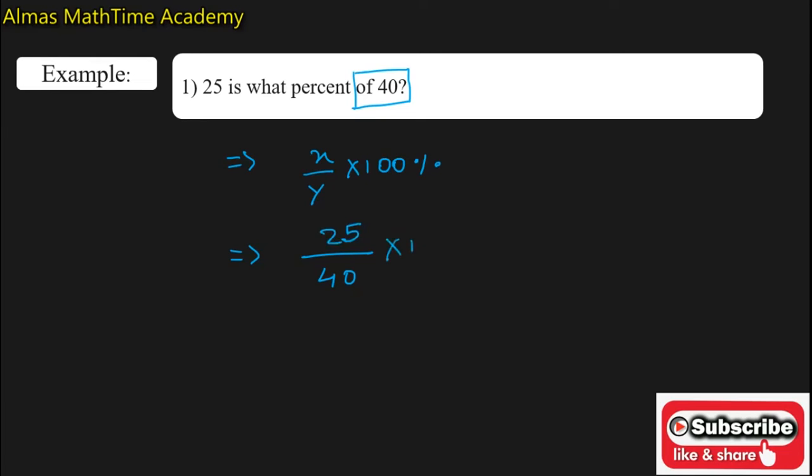So 25/40 × 100%. Now solve this fraction: 100 got cancelled with 40, giving us 5. Now 5 × 25 will be 125/2%.